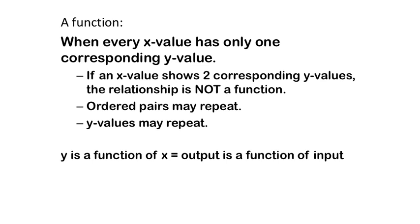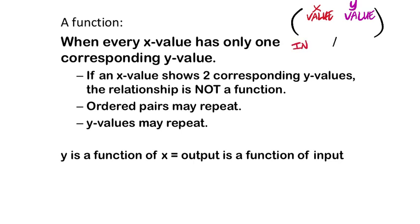It must have only one corresponding y value. If an x value shows two corresponding y values, the relationship is not a function. Note that y values may repeat — that's fine. You may also see the phrasing 'y is a function of x,' which is the same as saying the output is a function of the input. In an ordered pair, the first value is the x, or input, and the second is the y, or output.